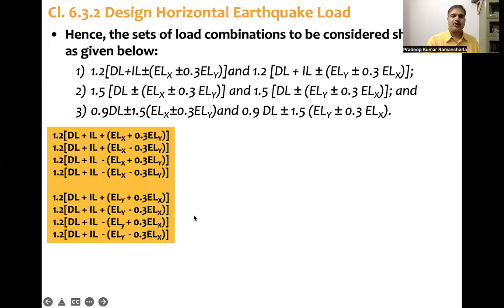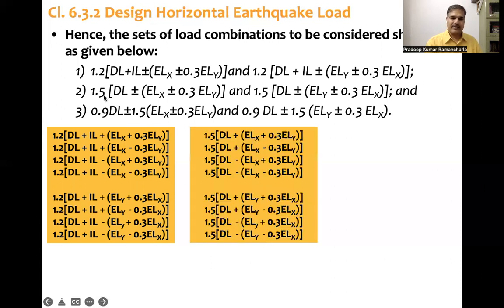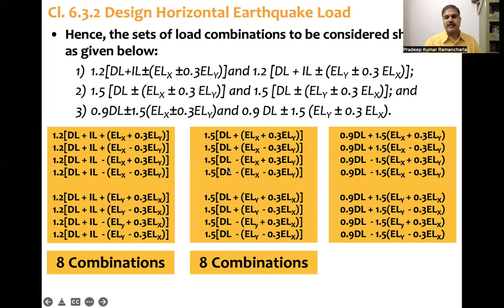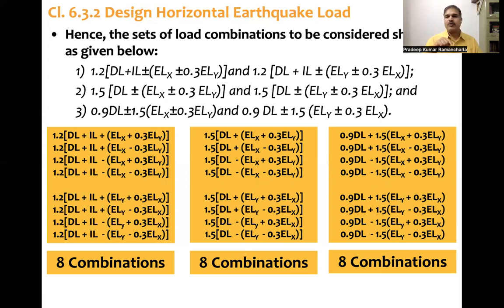The third set — 0.9DL ± 1.5·(EL-X ± 0.3·EL-Y) — also gives 8 load combinations. So total: 8 + 8 + 8 = 24 load combinations. In addition to these, we have one more combination: 1.5DL + 1.5IL (with no earthquake). Therefore, the total number of load combinations is 25, and all 25 should be taken into consideration for design when lateral load resisting elements are not aligned orthogonally.